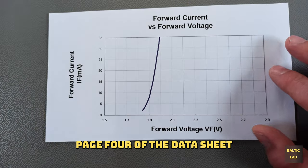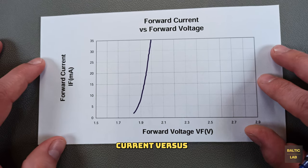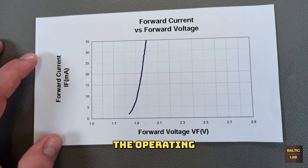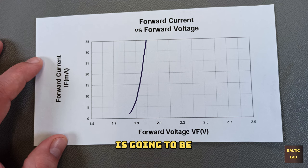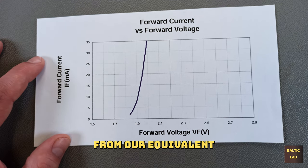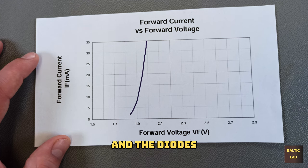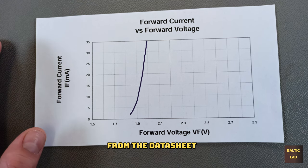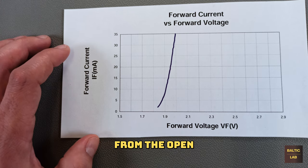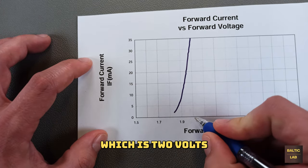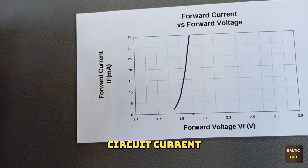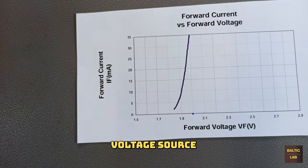Page 4 of the datasheet also shows the forward current versus forward voltage characteristic of the diode. The operating point of our circuit is going to be the intersection of the load line from our equivalent voltage source and the diode's IV characteristic from the data sheet.